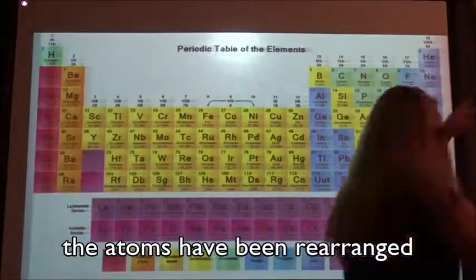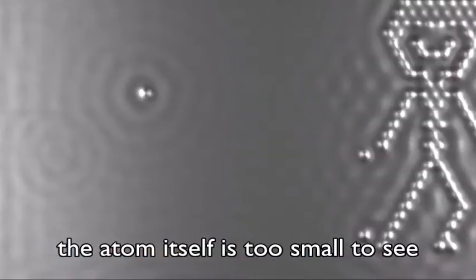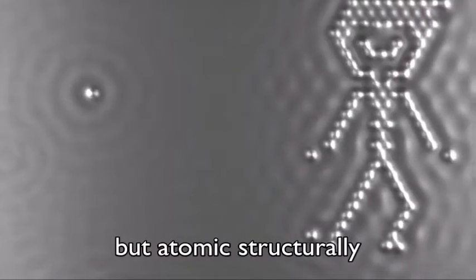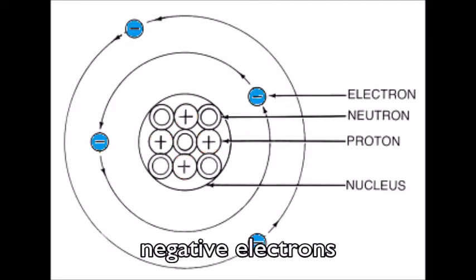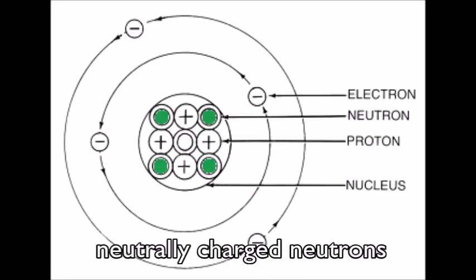The atom itself is too small to see, but atomic structure has positive protons, negatively charged electrons, and neutrally charged neutrons.